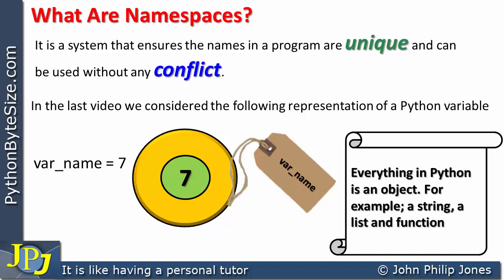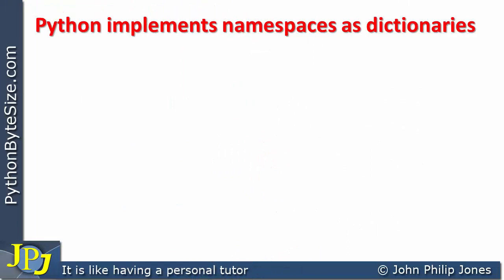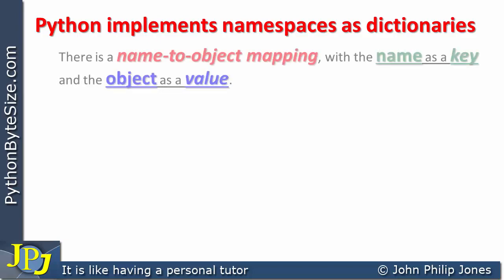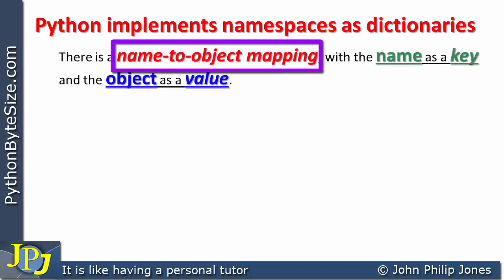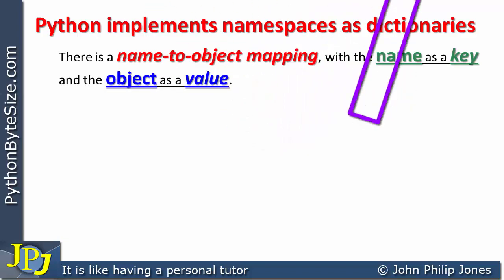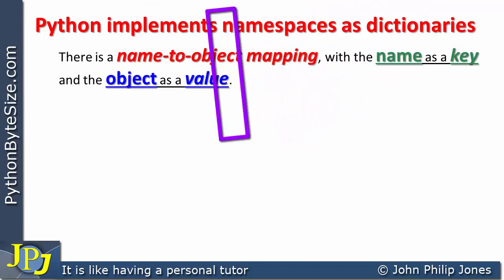We should be asking: how does Python organize the relationship between an identifier and the instance of a class? The answer is it uses dictionaries. The relationship between an identifier and the object it is identifying is implemented in Python as namespaces, and these namespaces are organized using dictionaries. There is a name-to-object mapping with the name as a key and the object as a value.